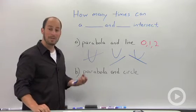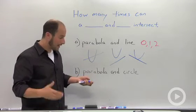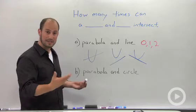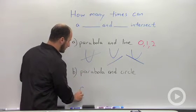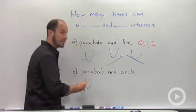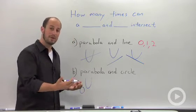Another example is a parabola and a circle. So again, let's just draw out some figures and see how many times these can intersect. Easiest one to see is zero times. You have a circle, you have a parabola, they're completely different. No intersections.